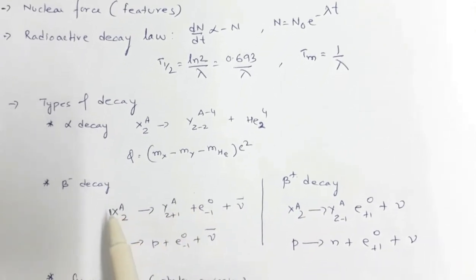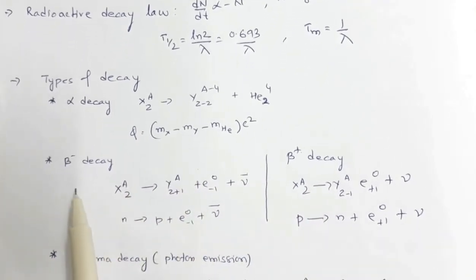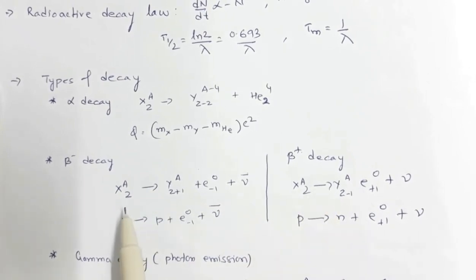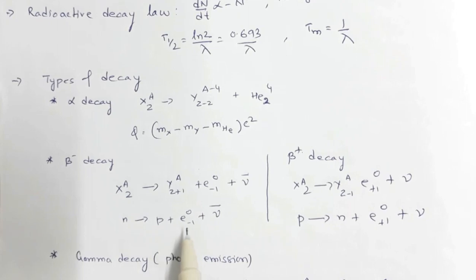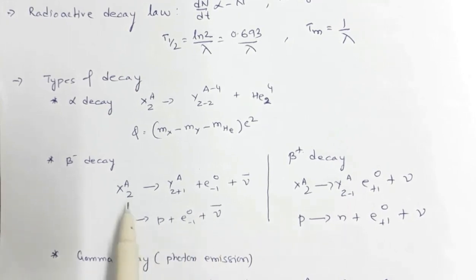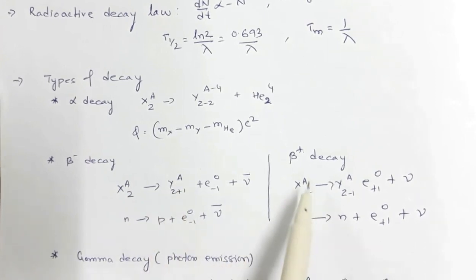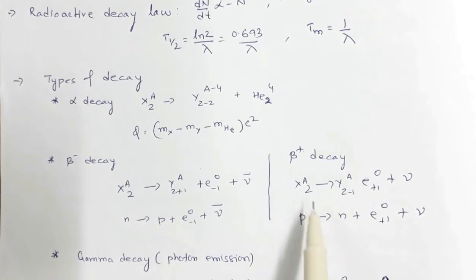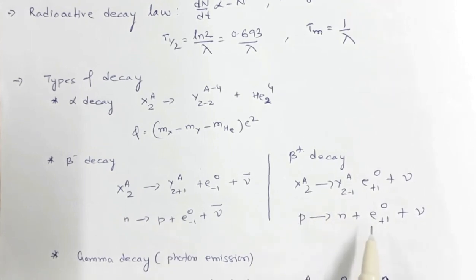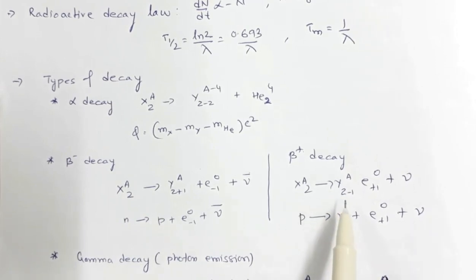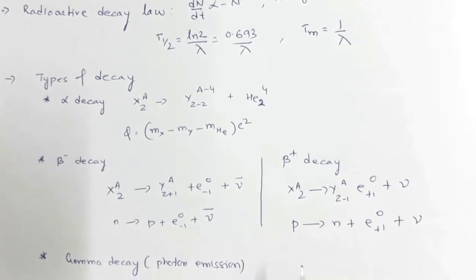Beta decay is of two types. In beta-minus decay, a neutron is converted into a proton with the release of an electron and an anti-neutrino — the number of protons increases while mass number remains the same. In beta-plus decay, a proton is converted into a neutron with the release of a positron and a neutrino — the number of protons decreases while mass number remains the same.